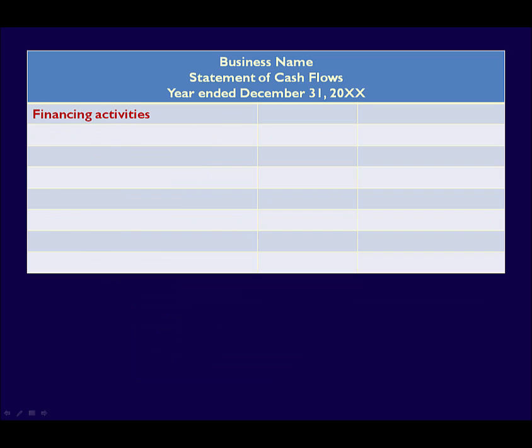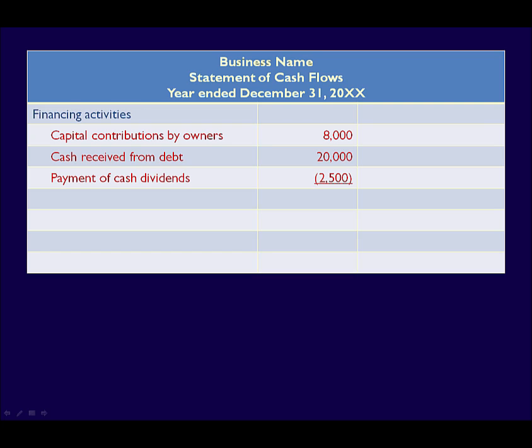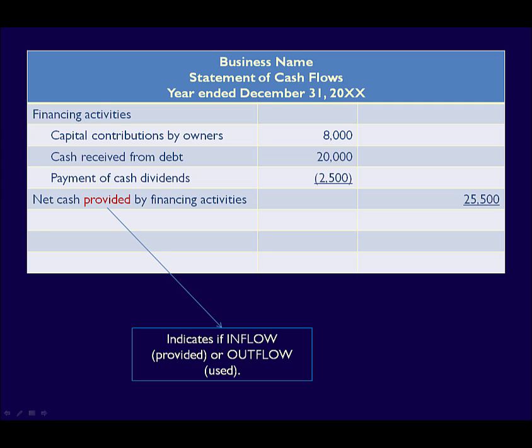The last section has the heading financing activities. This section shows the inflows and outflows due to funding activities, such as an inflow from the owners contributing capital, or an outflow due to the payment of cash dividends to the owners. Each inflow or outflow is listed individually, followed by a subtotal for the financing activities. The word 'provided' indicates that this activity had an overall inflow of cash.